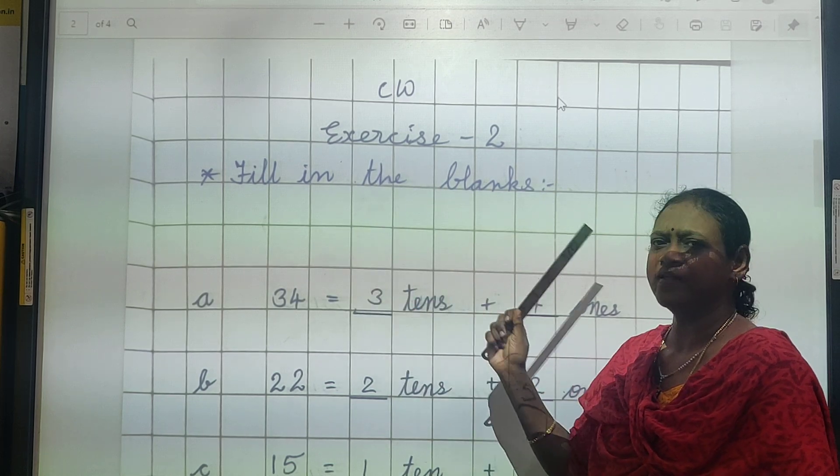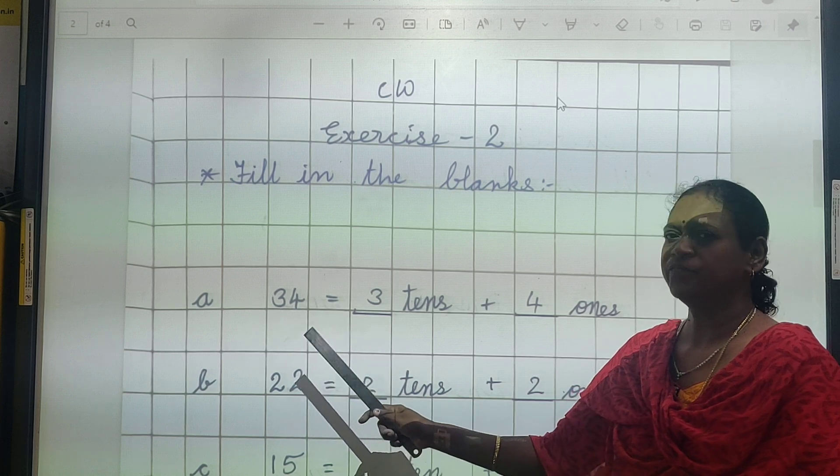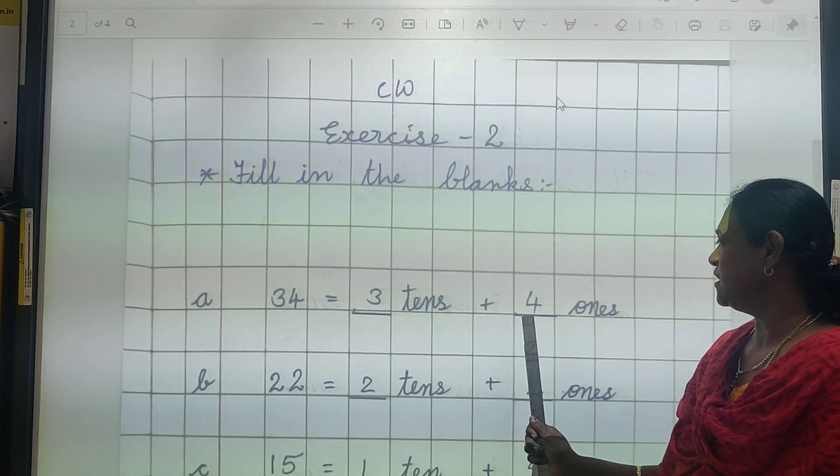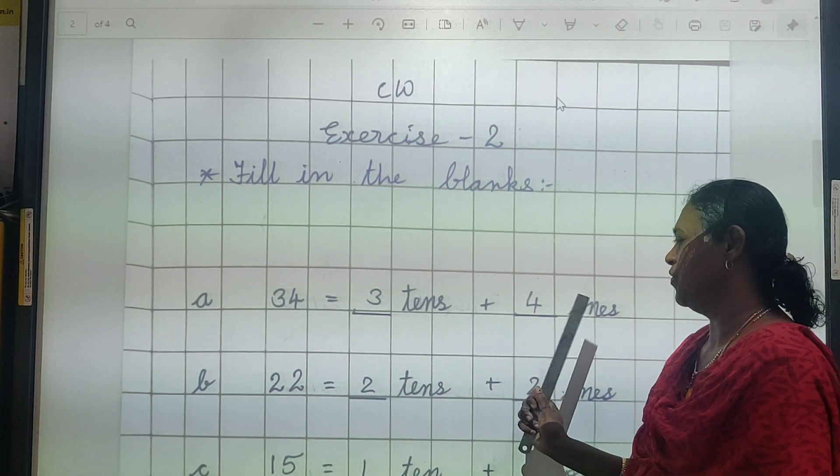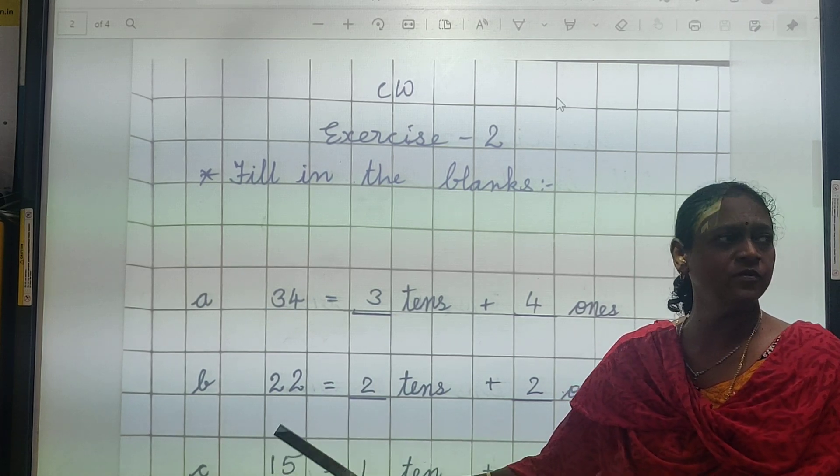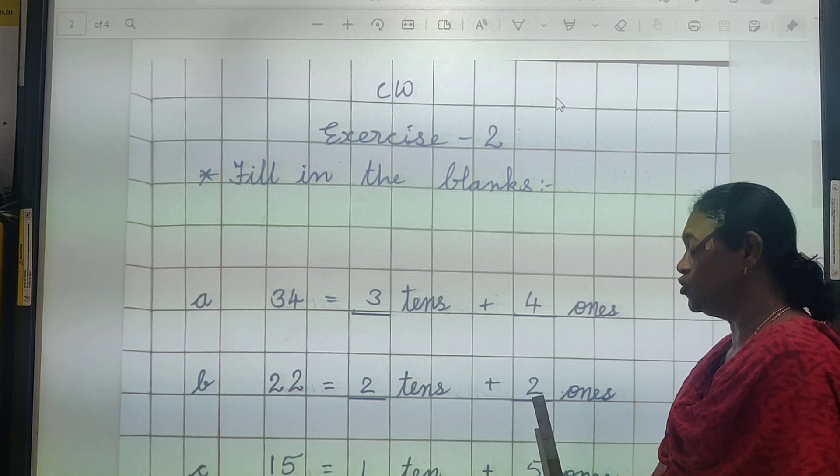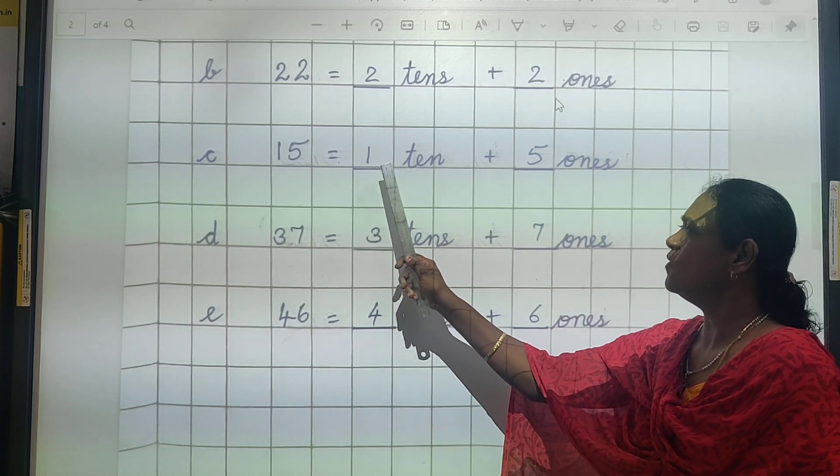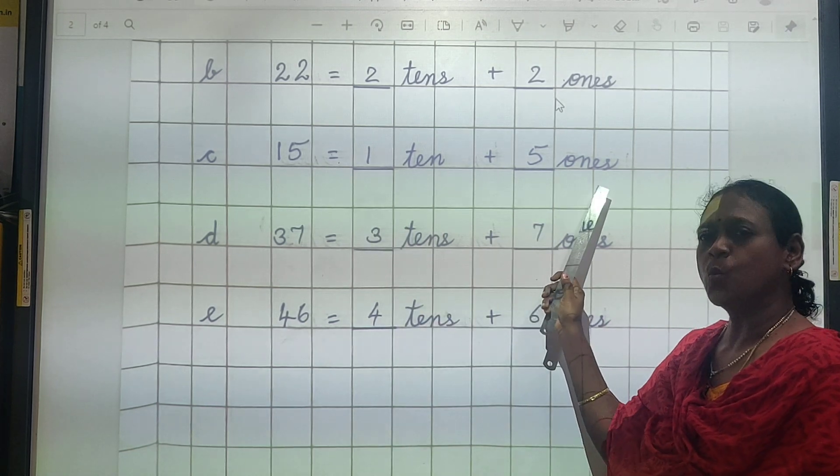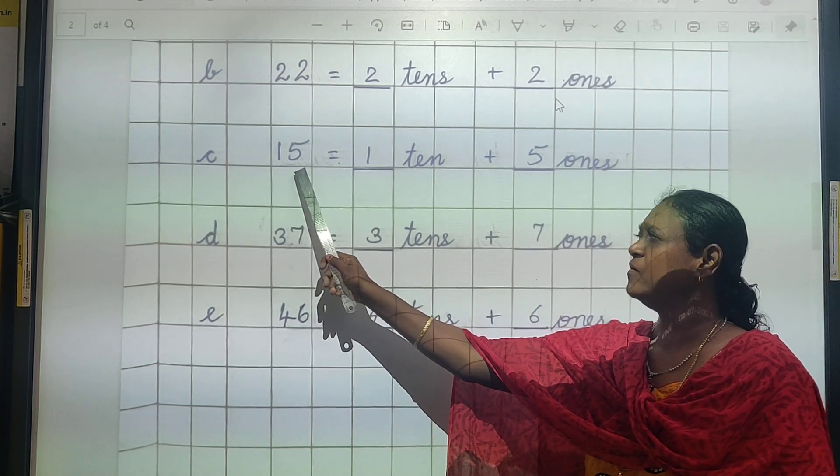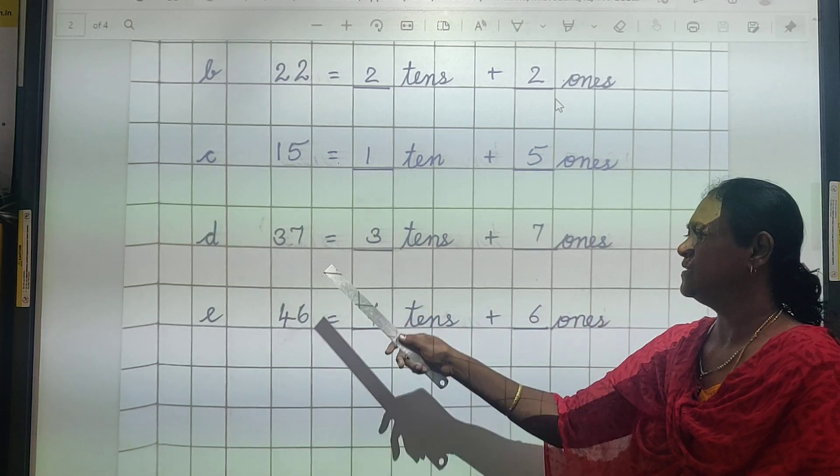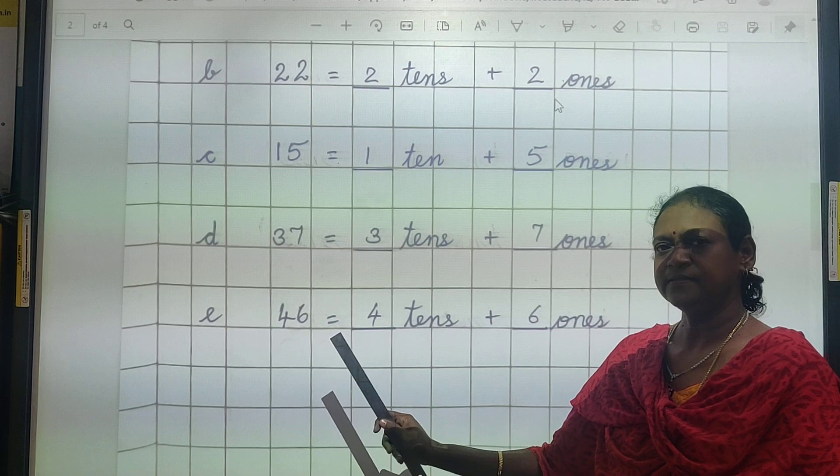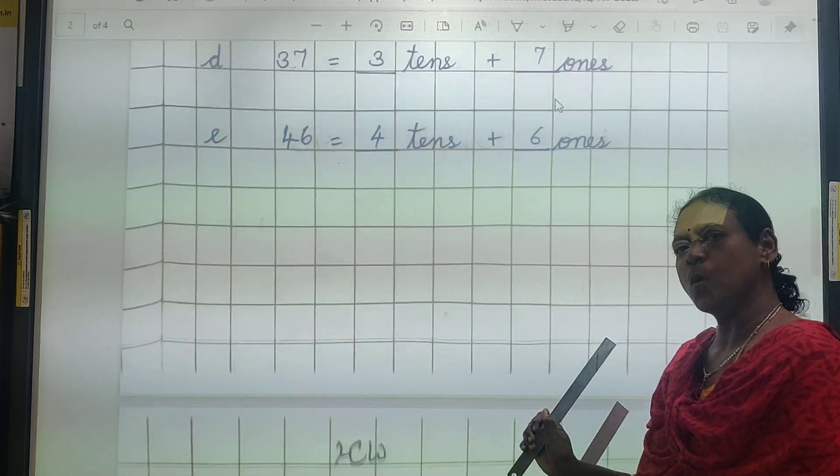Now second exercise, you have to write second page. Exercise 2, fill in the blanks. This is 34. 34 means kitne tens hai? Left side 3, yes, take. Okay, 3 tens plus 4 ones. Kitne ones? 4. 22 means 22, kitne tens? 2 tens plus 2 ones. This is 15. 15, so kitne ones hai? 1 ten and 5 ones. Always see right side is ones, left side is tens. 37, this is 3 tens plus 7 ones. 46, correct, 4 tens plus 6 ones. Okay.